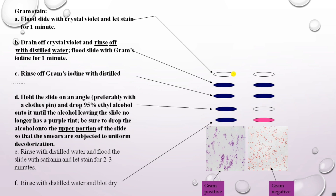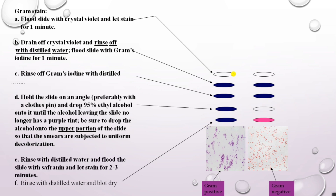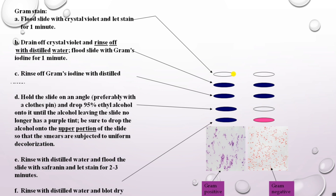After decolorization, rinse the smear again with distilled water and flood the slide with safranin — the counter stain. Allow it to stain for one to two minutes. After the preferred time, rinse the slide with distilled water and blow dry the glass slide. You can then observe the smear under the oil immersion objective — that is 100x — of a light microscope.